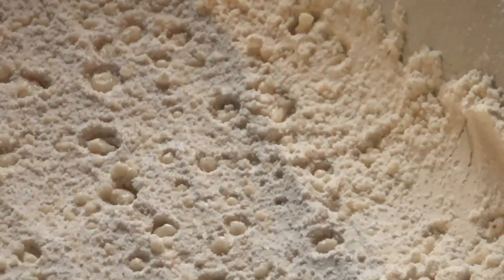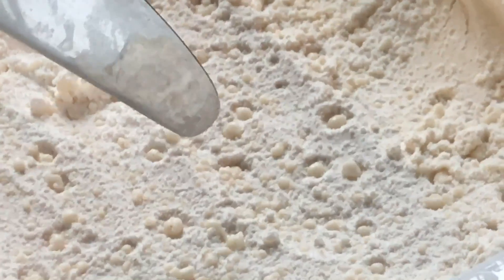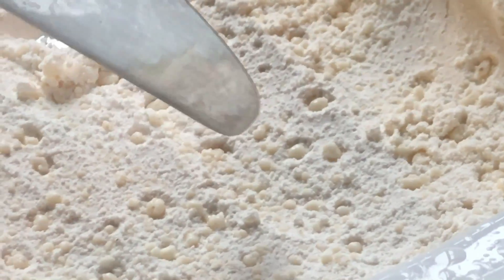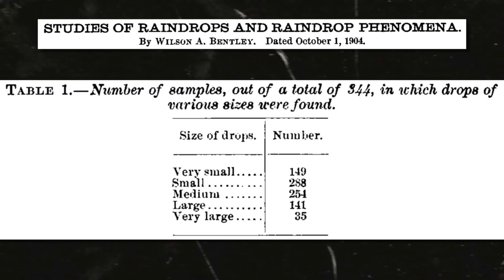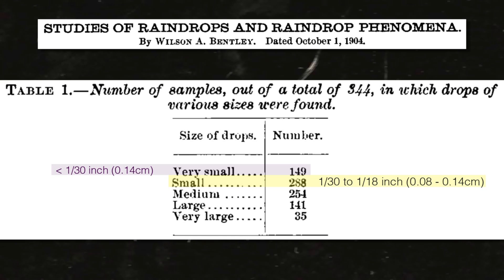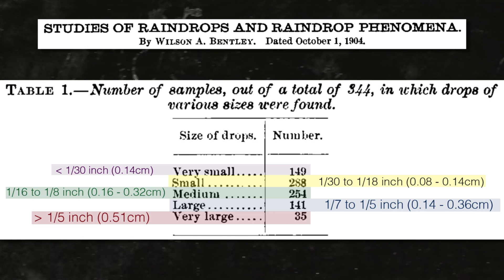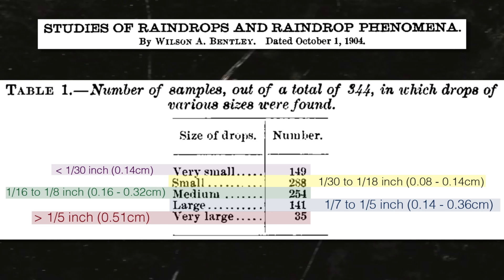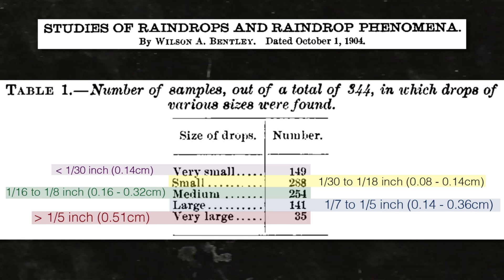He did the proper scientific thing and calibrated his results. He took drops of known size and dropped them from varying heights into flour, and found out what sizes of pellets they made. He found that basically the size of the pellets corresponded almost exactly to the size of the drop that fell in the first place. So just by measuring the size distribution of the pellets, he was able to find out about the size distribution of rain.